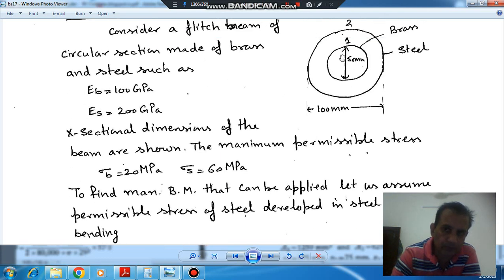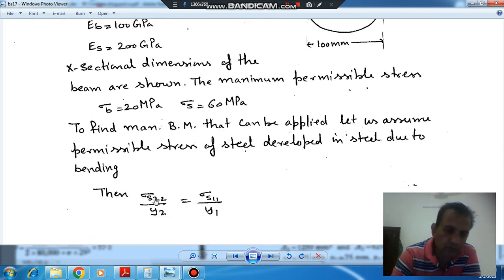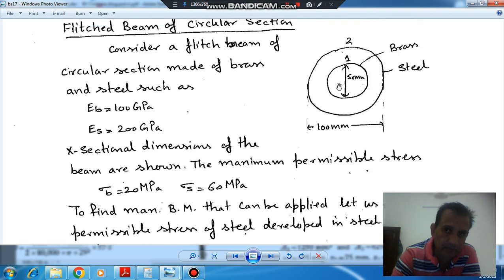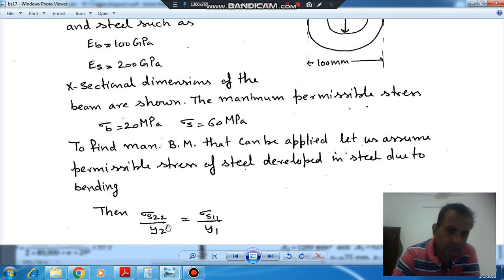So now at section 2-2, the stress in the steel is maximum. We can apply the bending equation for brass and for steel. So from section 1-1 to 2-2, σ_S2 by y₂ is equal to σ_S1 by y₁.